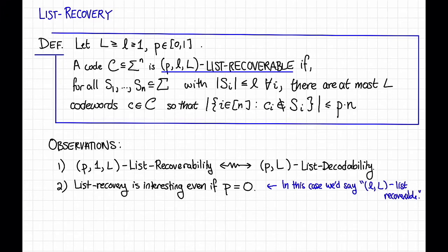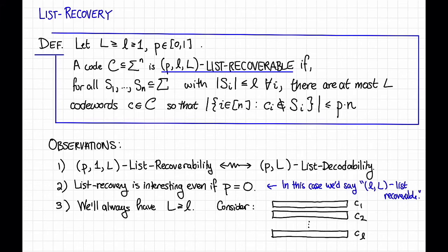The third observation is that we're always going to have big L greater than or equal to little l, even if we didn't stipulate it in the definition. Pause the video now and think about why this is true. Okay, so here's the reason. I claim that for any code, I can come up with lists s1 up through sn of size little l so that there are little l codewords that go through those lists. Indeed, consider the list that I get in the following way. Take any little l codewords, let's call them c1 through c little l.